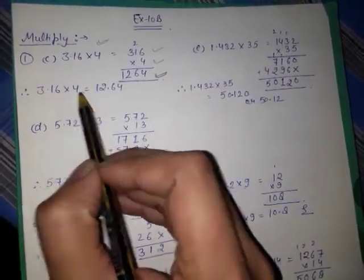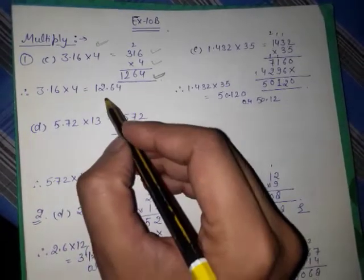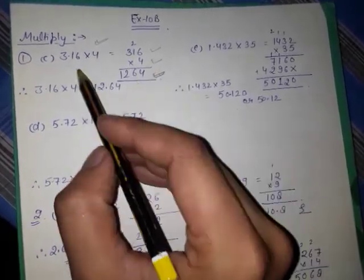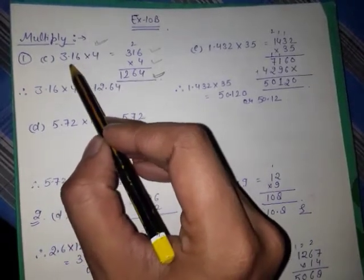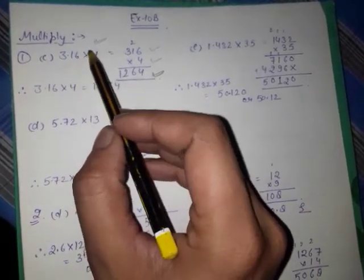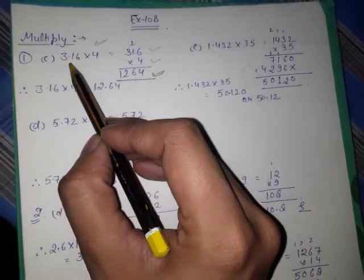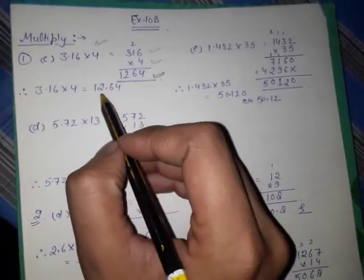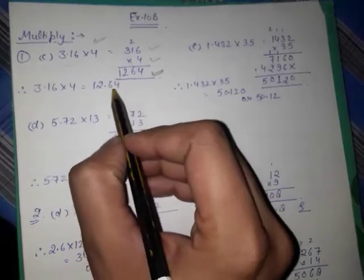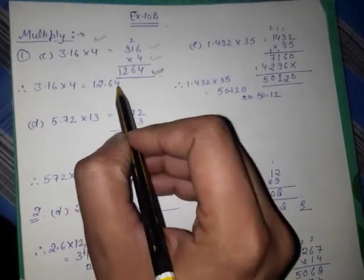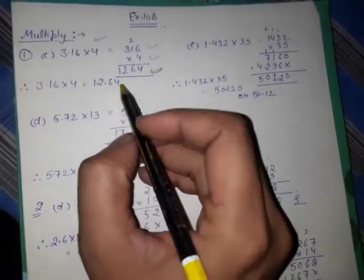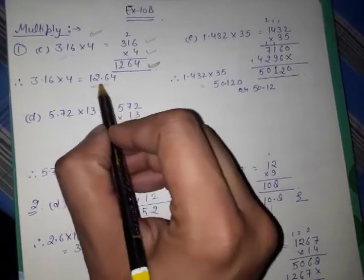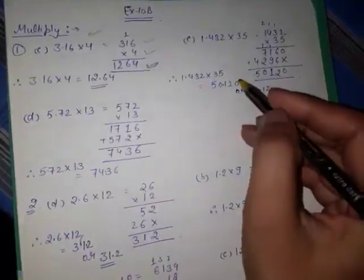3.16 multiplied by 4 is equal to 1264. In 3.16, the decimal is in the third place from the right. So in 1264, counting from the right: 4, 6, 2 — the decimal goes in the third place. So your answer will be 12.64.